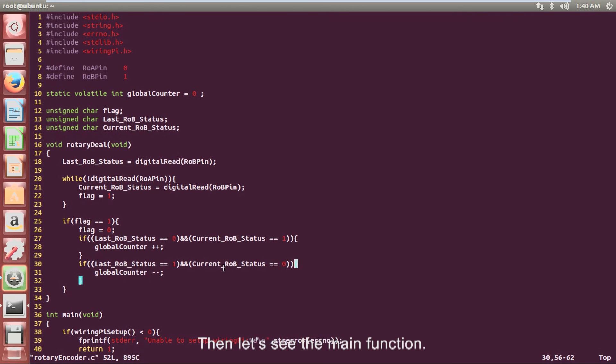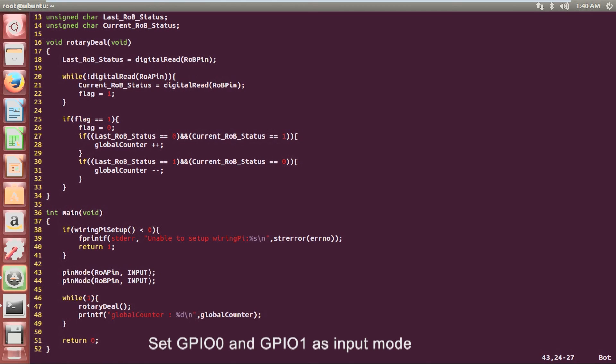The nested mean function, set GPIO0 and GPIO1 as input mode. Because we need to detect the status of the external rotary encoder. The other thing we need to do is to print the value of global counter on the screen.